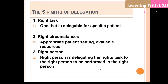The five rights of delegation are: right task — one that is delegable for a specific patient, assigning team members capable of doing the work accordingly. Right circumstances — appropriate patient setting with available resources. Right person — delegating the right tasks to the right person. For example, if someone knows CPR, you can delegate the main role to that person along with subordinates to perform on patients who need CPR.